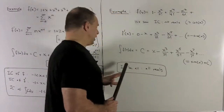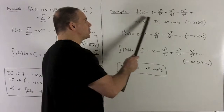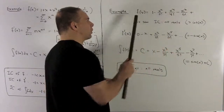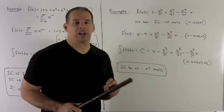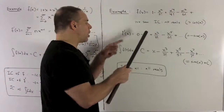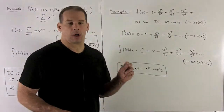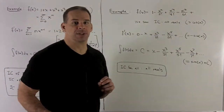Intervals of convergence: for the first one we've seen before, that's going to be all reals — so there are no endpoints to check. And it's going to be all reals for all three cases.